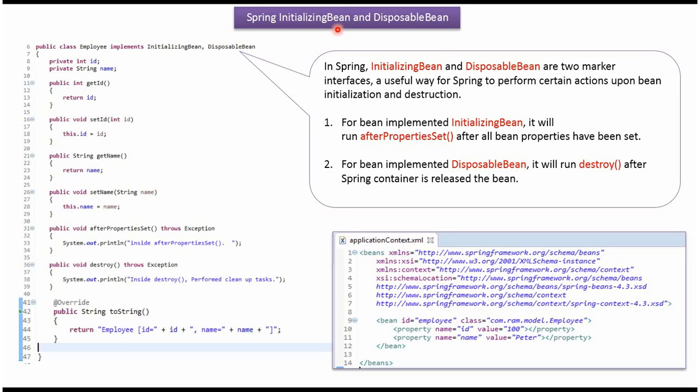This video tutorial covers Spring InitializingBean and DisposableBean. Suppose we want to perform any action after all properties of a bean are set, then we have to implement the InitializingBean marker interface and provide an implementation of the afterPropertiesSet method.